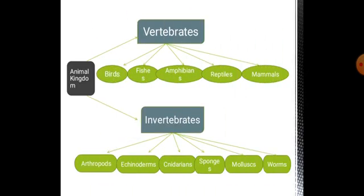The animal kingdom is divided into vertebrates and invertebrates. Vertebrates are further divided into birds, fishes, amphibians, reptiles, and mammals. Invertebrates are further divided into arthropods, echinoderms, mollusks, sponges, and worms.